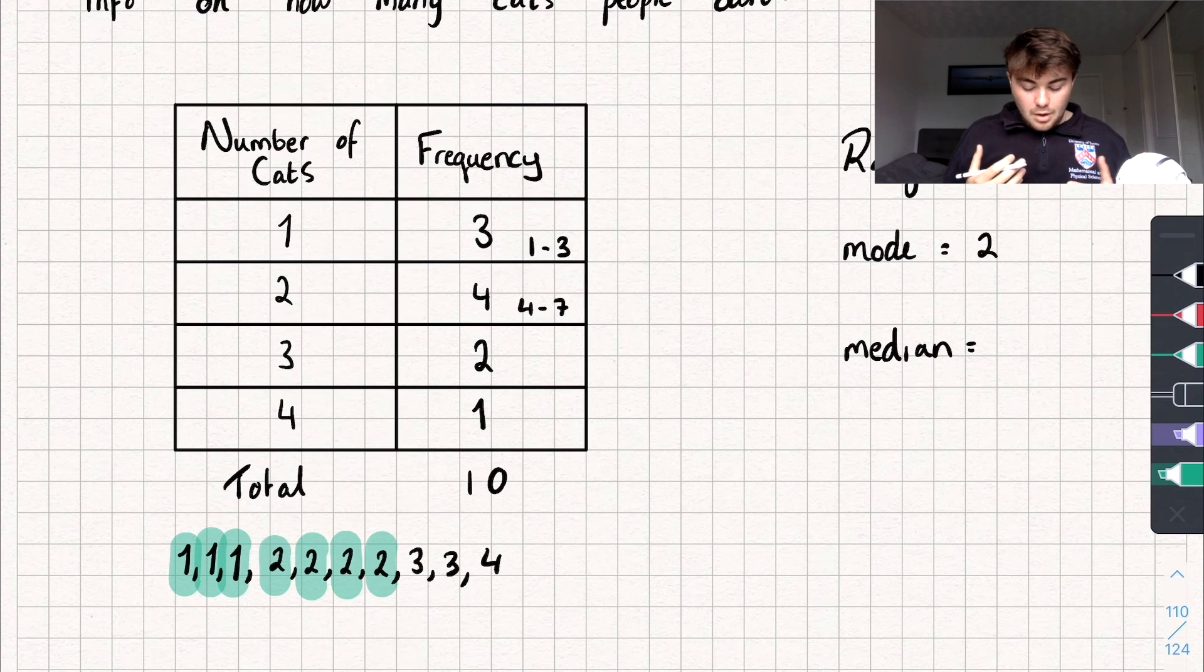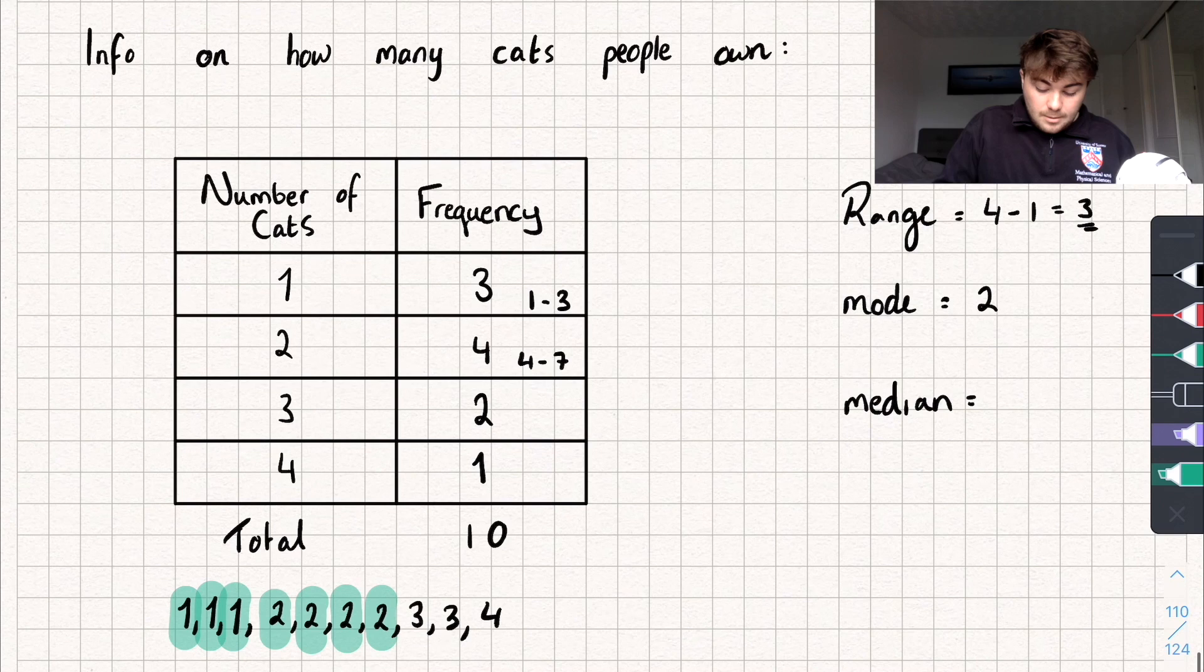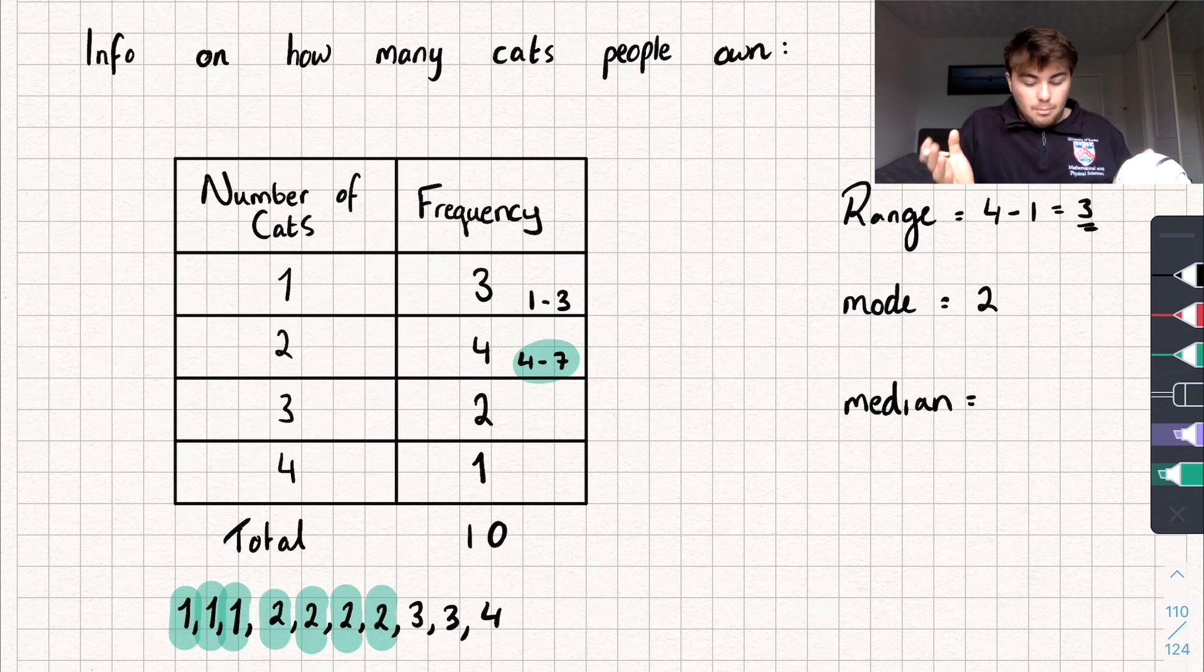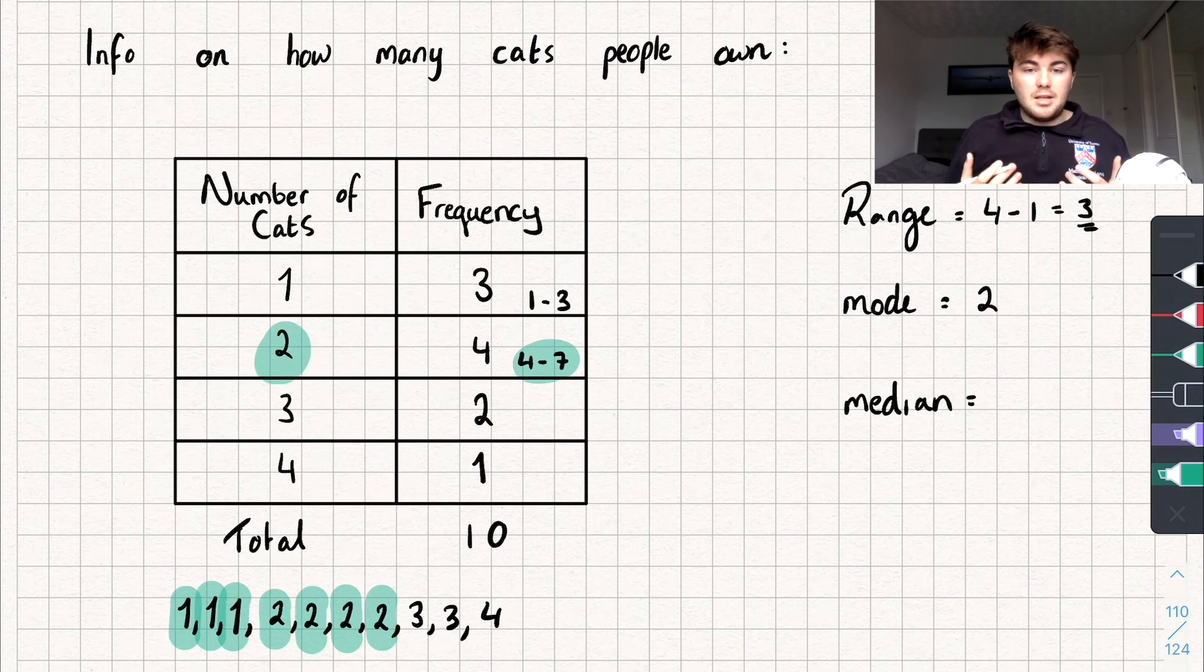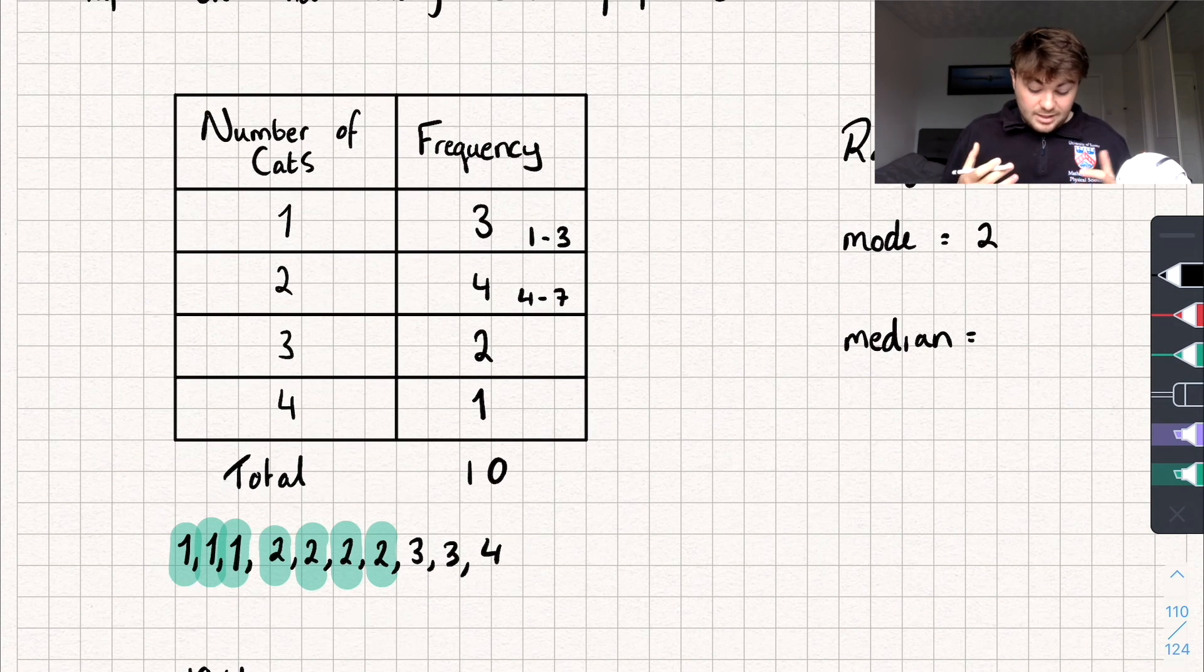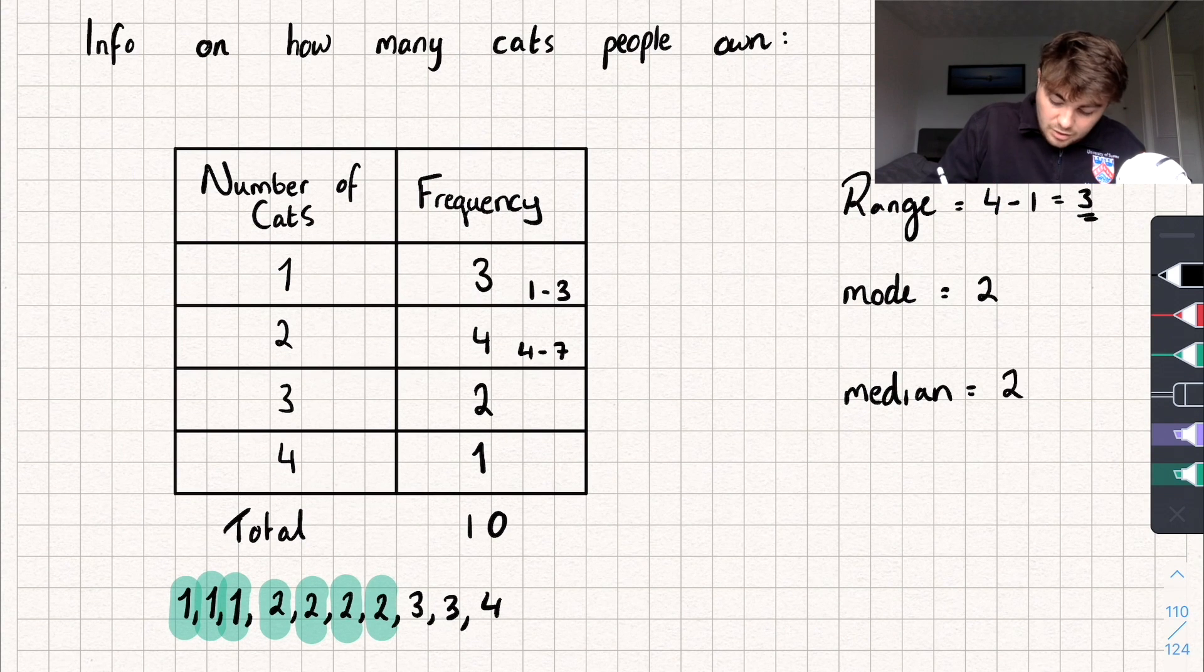So you can see what I'm doing here. And we want the number that is the 5.5th one in our list. And that's going to be between the 4th and 7th number. So the number of cats in the median is going to be 2. Hopefully that makes sense. That's a little tricky to get your head around maybe. But hopefully the little diagram I've done or the list I've done there helps. So the median is 2.